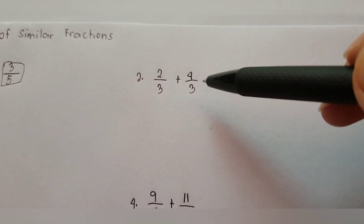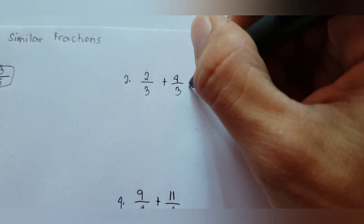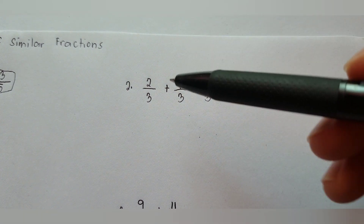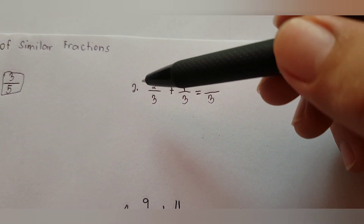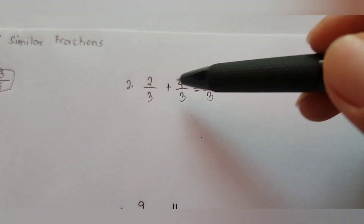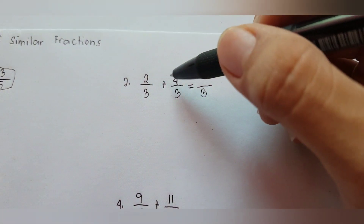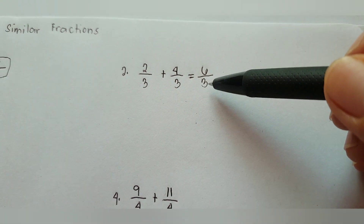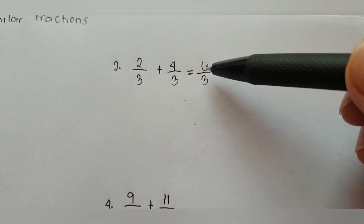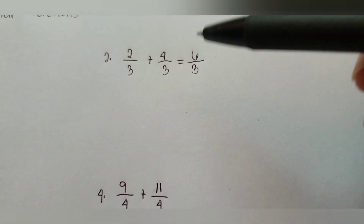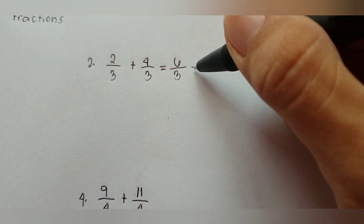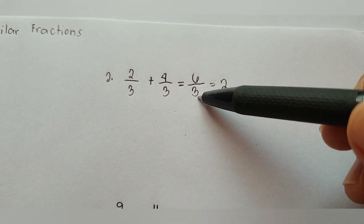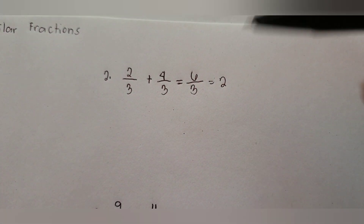To add these fractions, since they are similar fractions with a common denominator, just copy the denominator, which is three. Then add the numerators directly: two plus four equals six. So we get six over three. Since six over three can be reduced to lowest terms, six divided by three equals two.